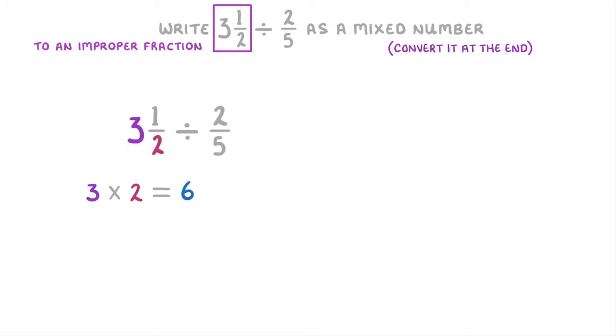So we do 3 times 2, which is 6, and then add that to the numerator. So because 6 plus 1 is 7, we end up with 7 over 2. And our question now reads 7 over 2 divided by 2 over 5.